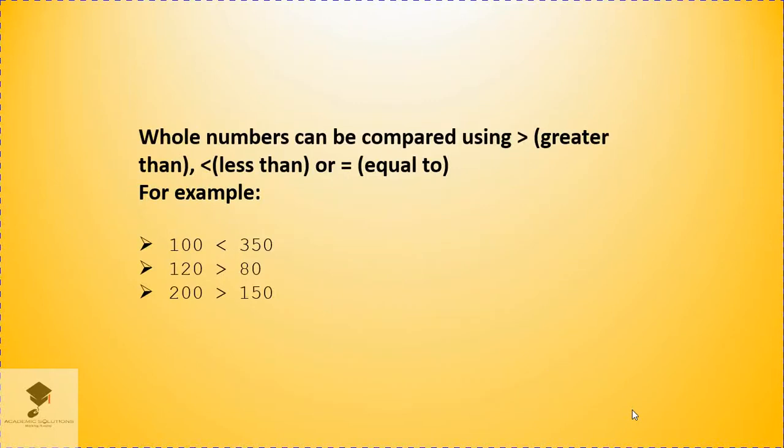Whole numbers can be compared using the symbol greater than and then less than or equal to. So, for example, we have 100 and then we have 350. But then we know that 100 is less than 350. So we are going to use the symbol of less than to compare these two numbers.